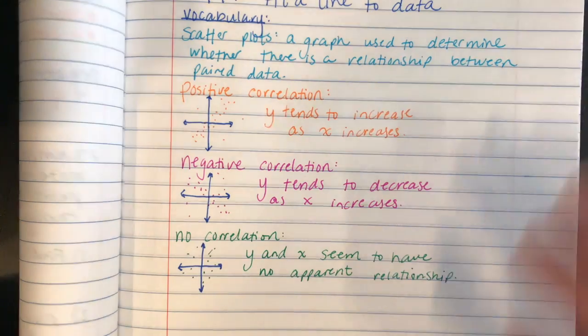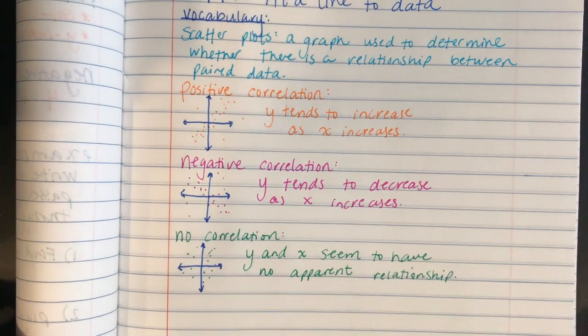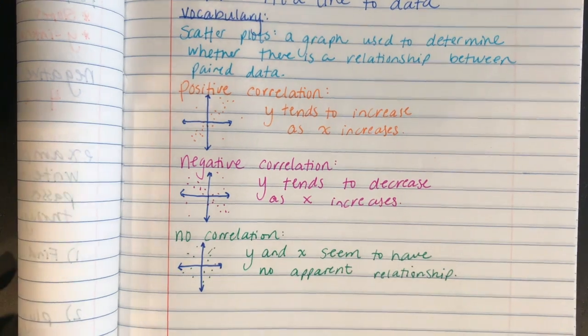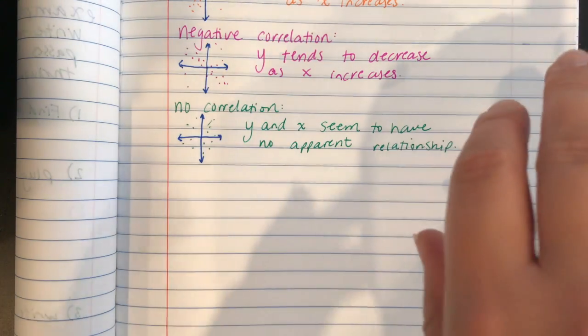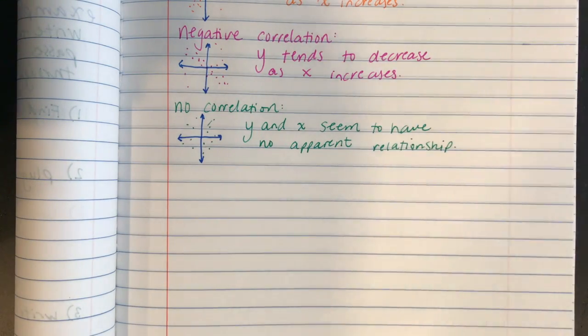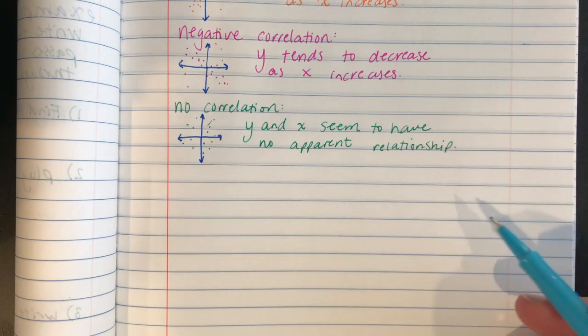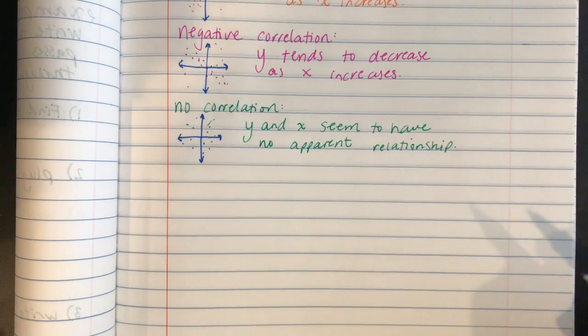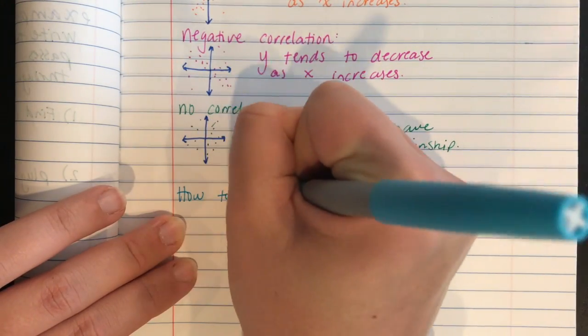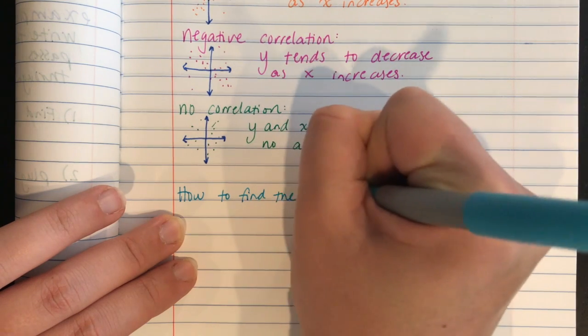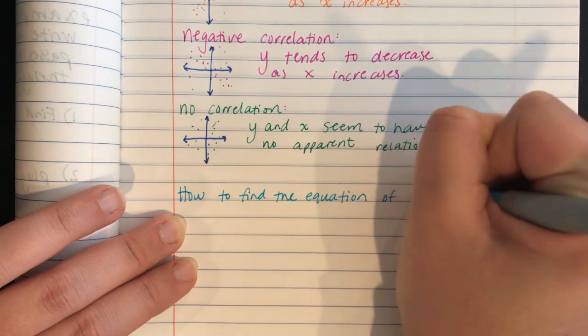Okay, so the last thing that you're going to be asked to do, other than identify whether or not it's a positive, negative, or no correlation when given a scatter plot, is to draw the line of best fit and to create your equation. And so you've basically already done this when we've given you a table or a graph and asked you what the equation is. It's just now you have to draw it yourself and you kind of have to decide where should my ruler go, how should I draw this line. So how to find the equation of a scatter plot.